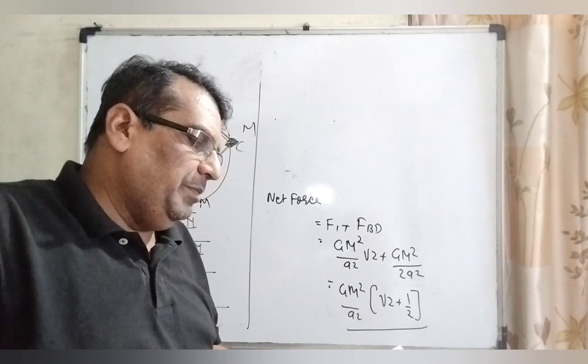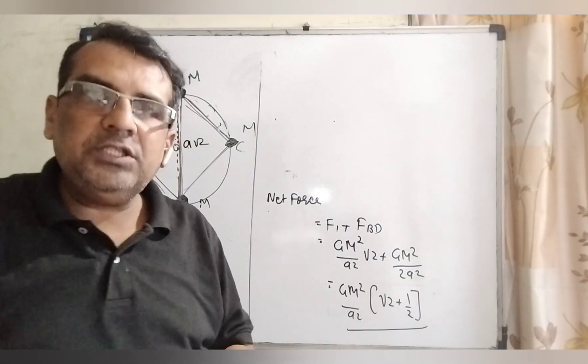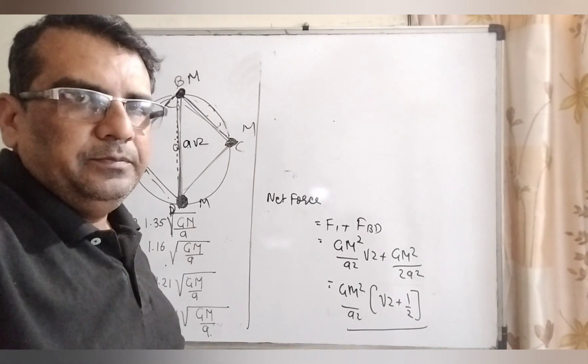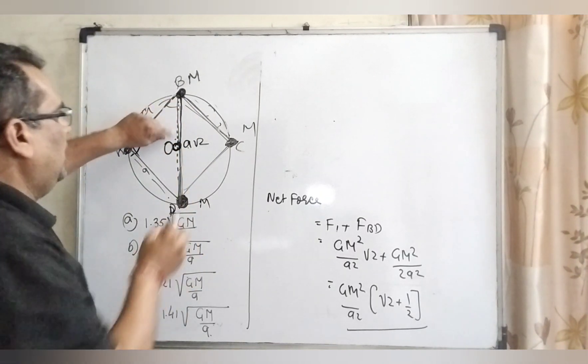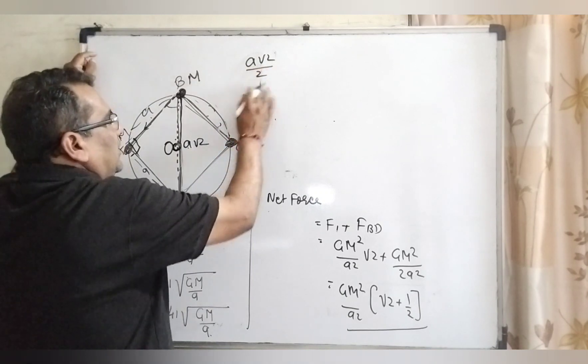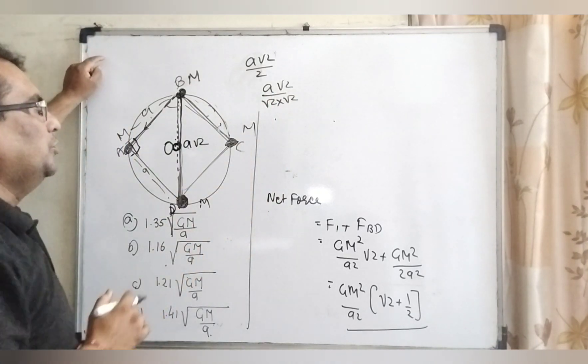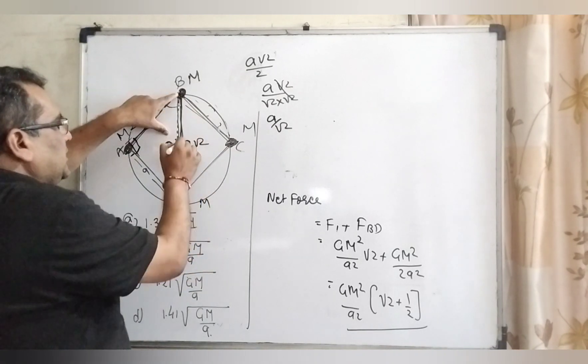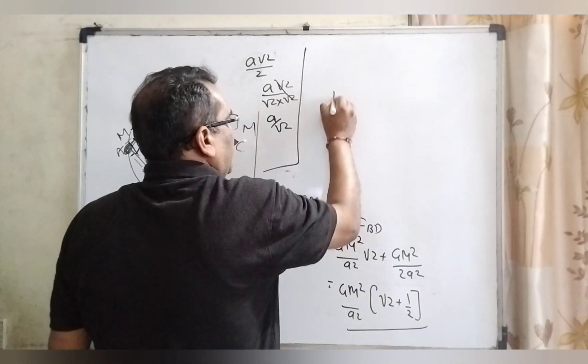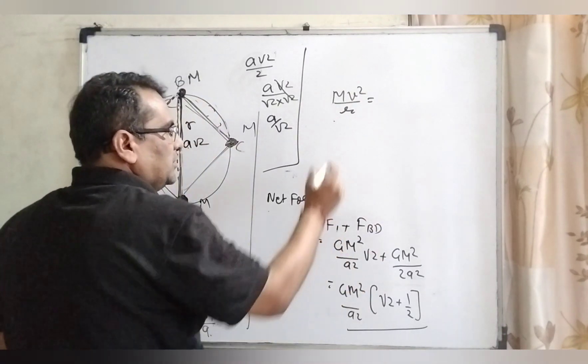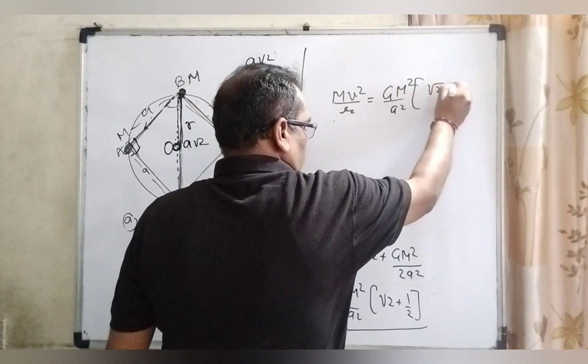What we have to find out? We have to find out what should be their speed if each of them revolves under the influence of other gravitational field. It means this net force is equal to the centripetal force. What is centripetal force? The distance between the B and O. Here you have given that A root 2 is total distance and it is a half. So therefore, distance of this point means R is given A by root 2. And what is the centripetal force? M v square by R equal to net force, GM square by A square and root 2 plus 1 by 2.